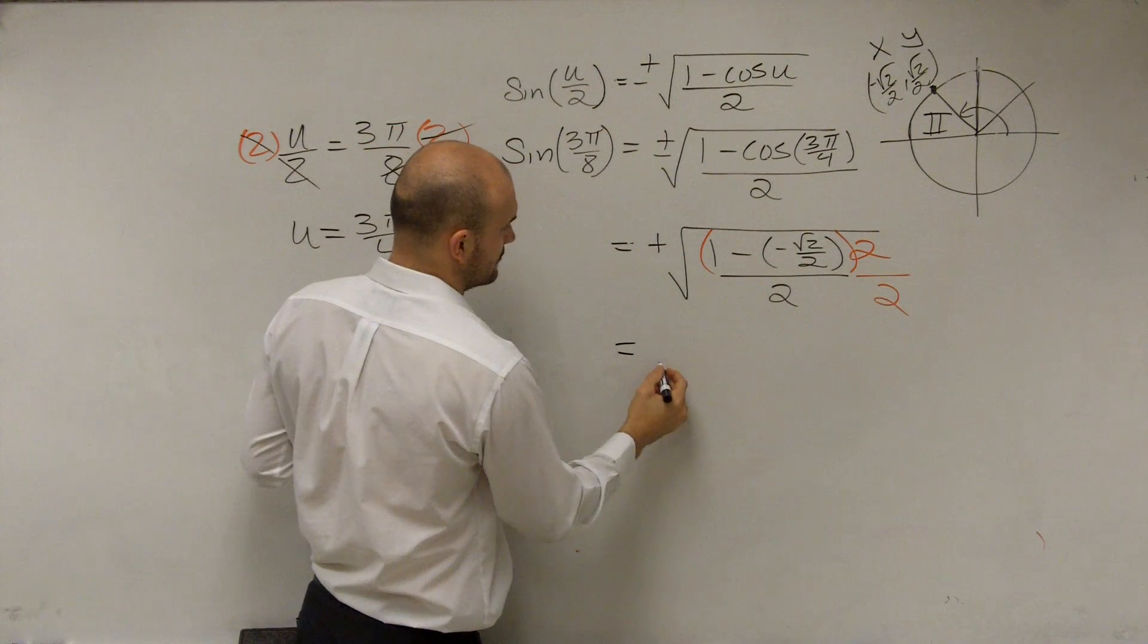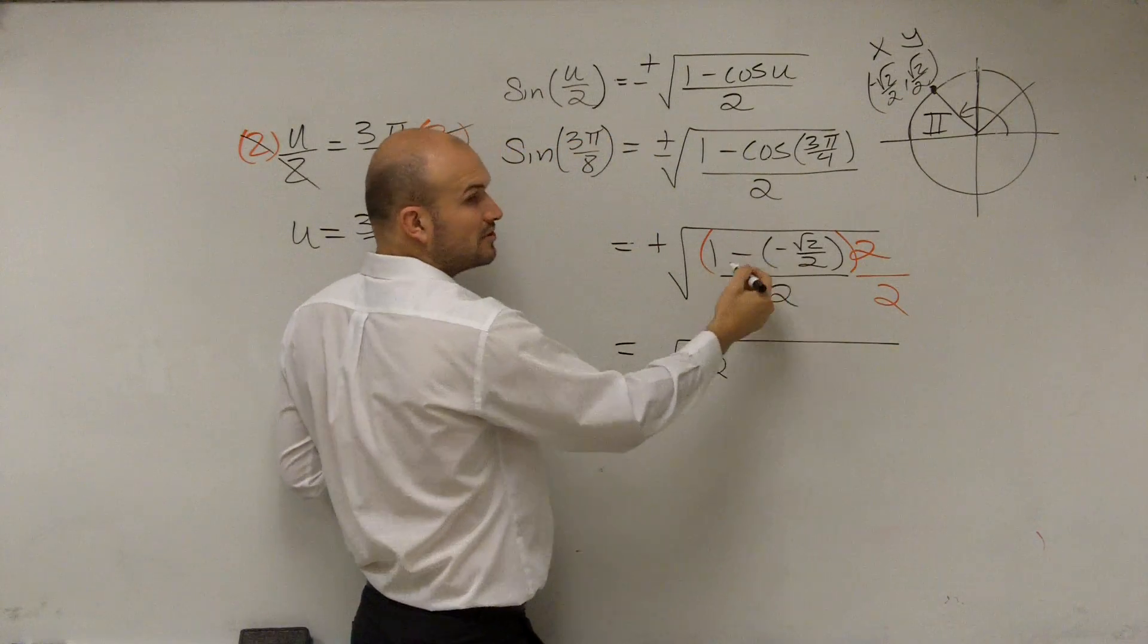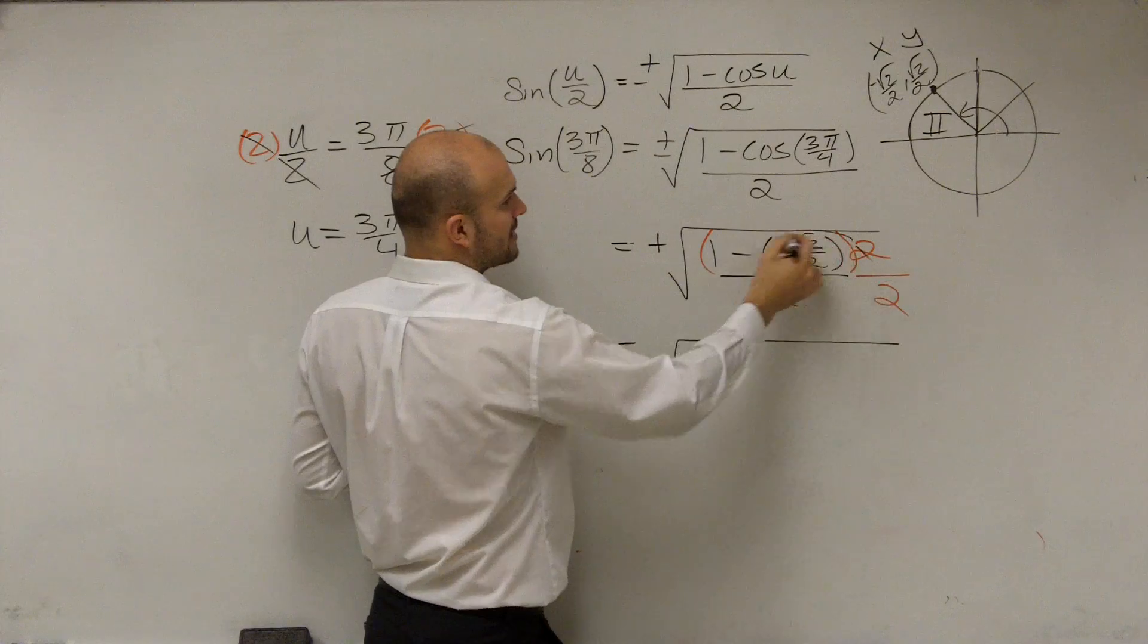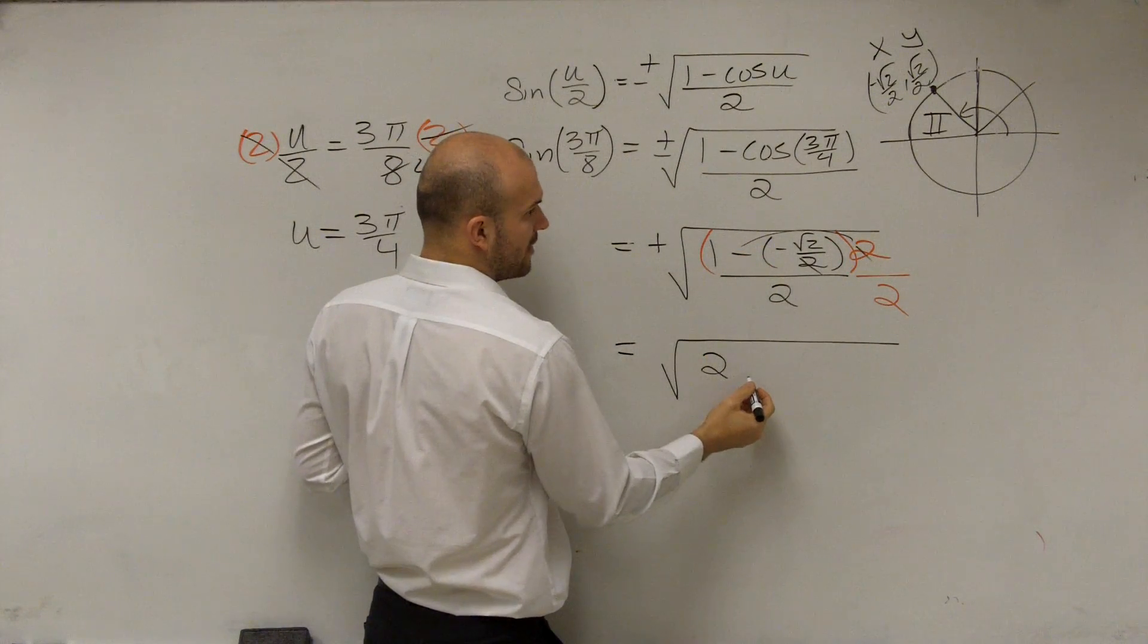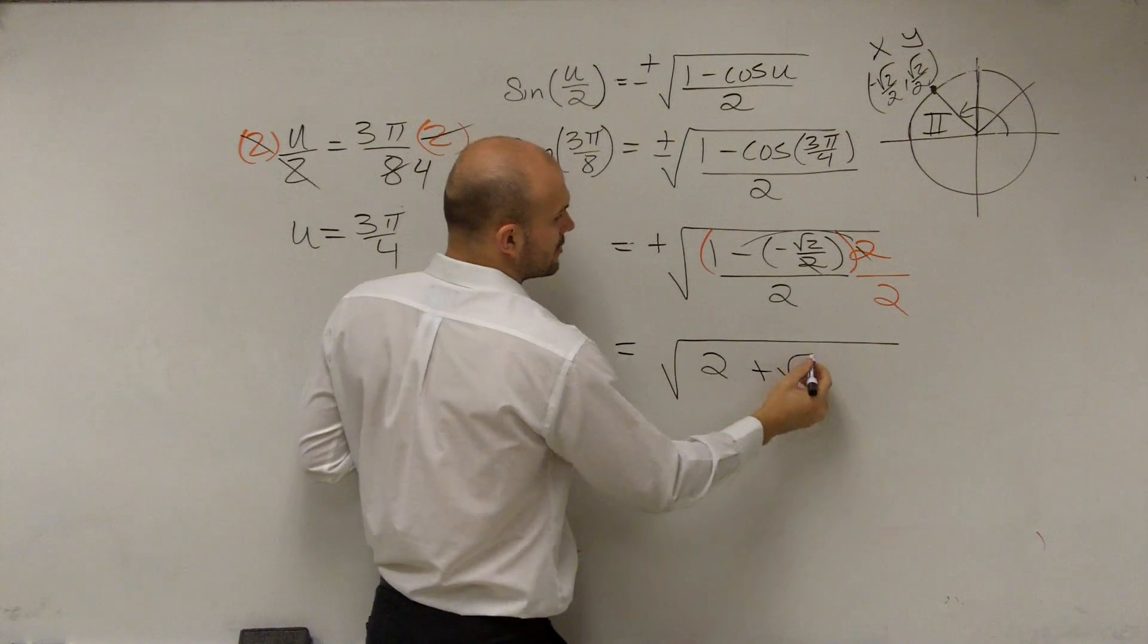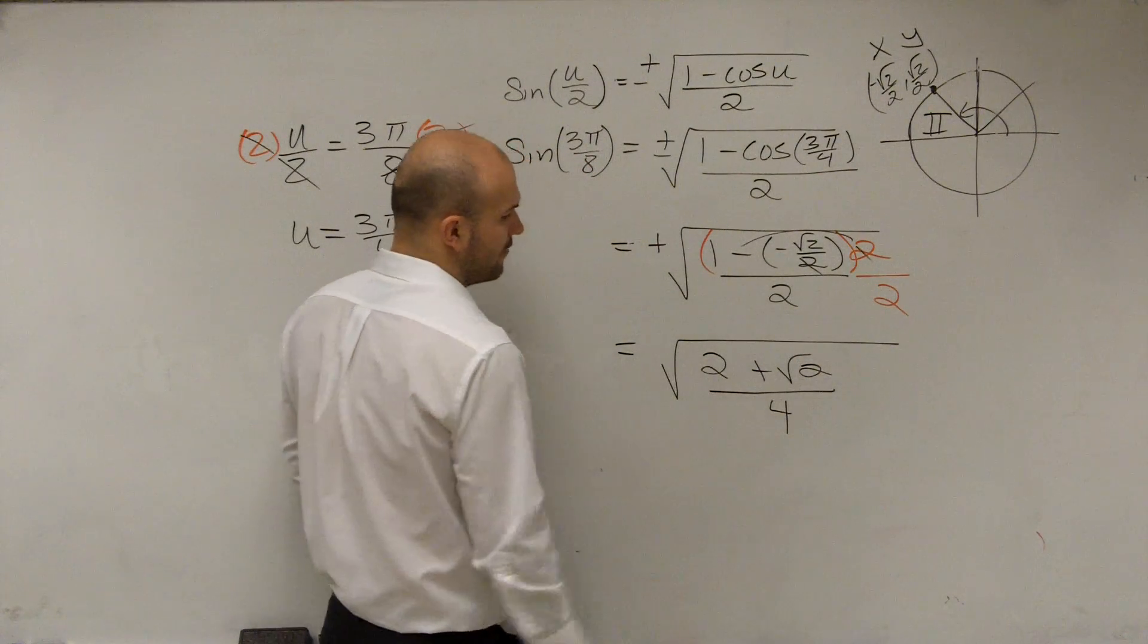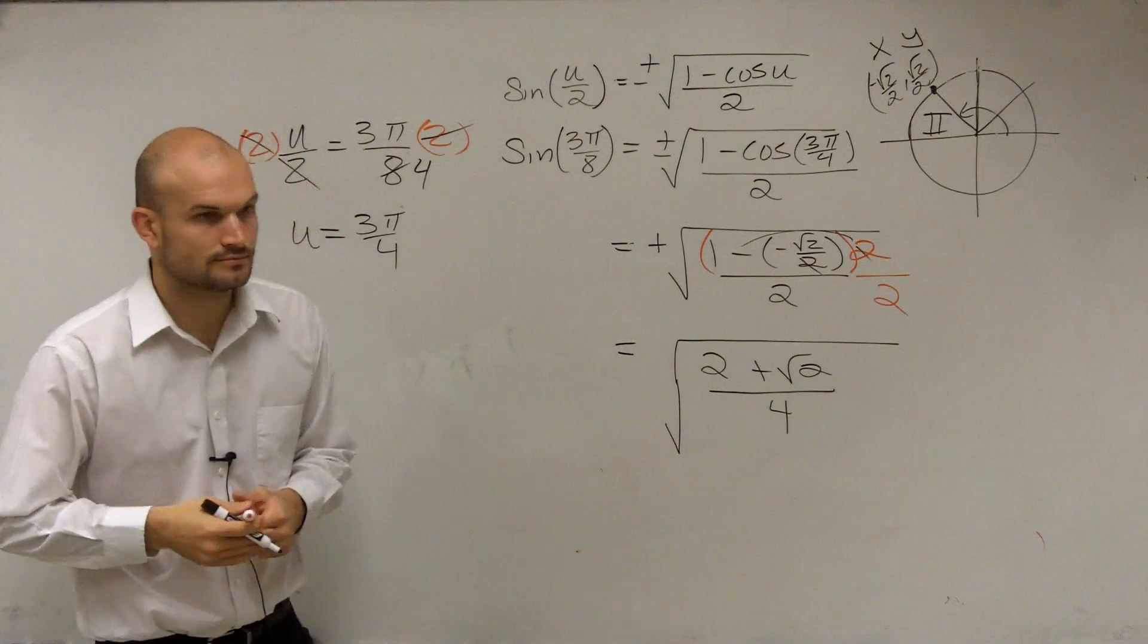So therefore, I now have positive square root of 2, double negative turns now to a positive. Now the 2's are going to cancel out, but you've got to remember to also multiply that by 2. So it's going to be 2, and then you'll have plus the square root of 2 over 2 times 2 is 4. Let's bring this down a little bit farther.